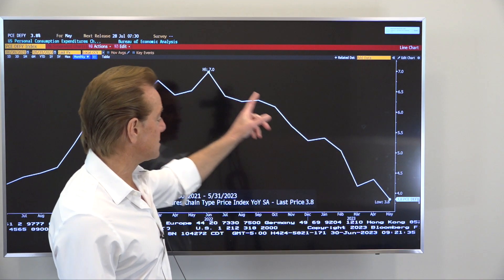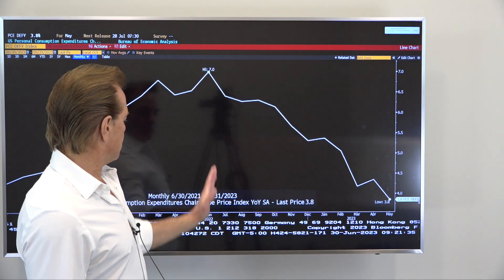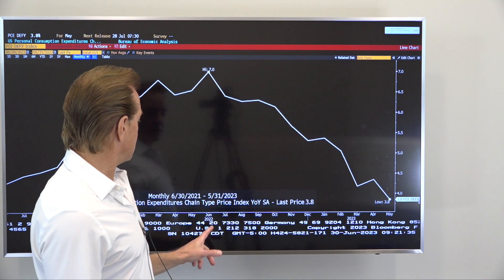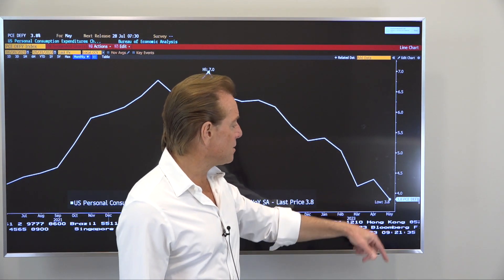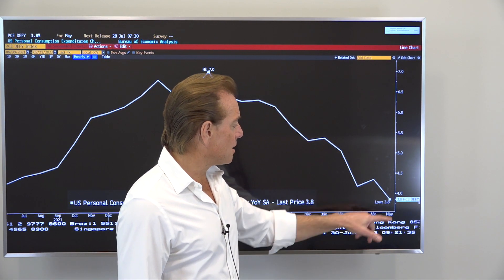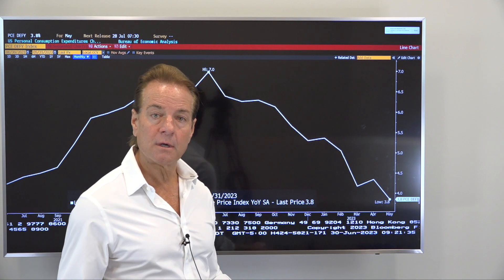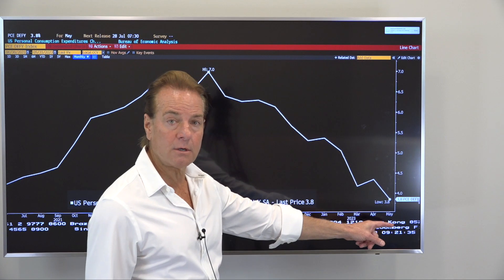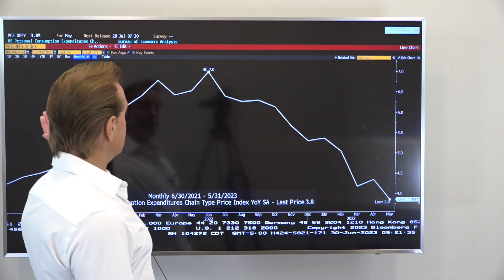Now here's PCE disinflation. Personal consumption expenditures up seven percent year over year last June. Now it's 3.8. Do the math on the chart that I just showed you. It goes to about three percent. Wow, that is compelling forward good news. Now what does it mean for the Fed?